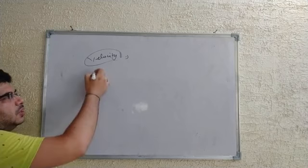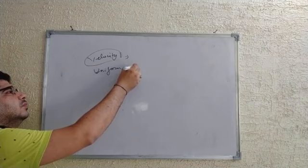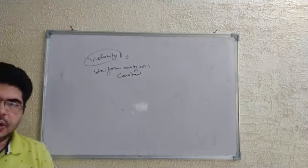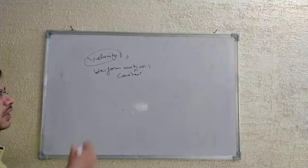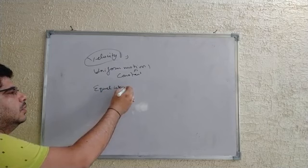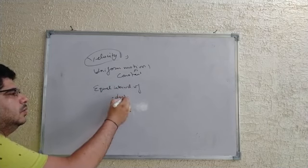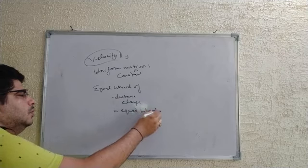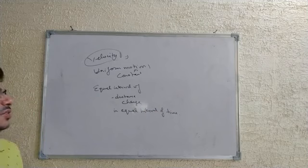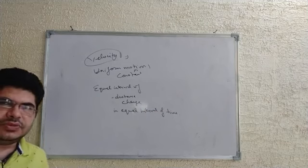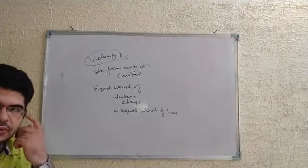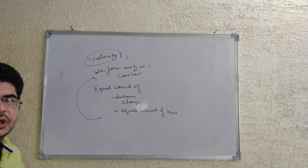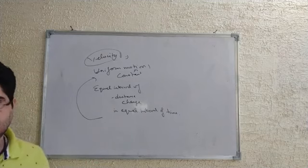Let me explain uniform motion. Uniform motion, or uniform constant motion, is when an object covers an equal interval of distance in an equal interval of time. When the time period changes but the distance covered remains the same in each interval, that motion is called uniform constant motion.